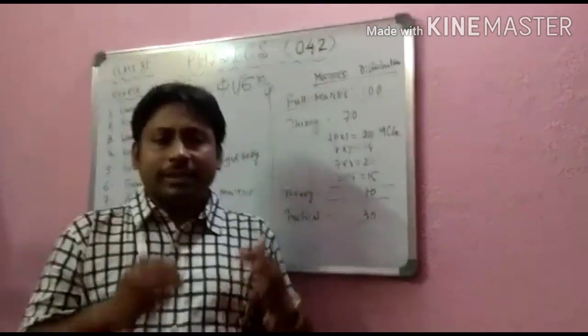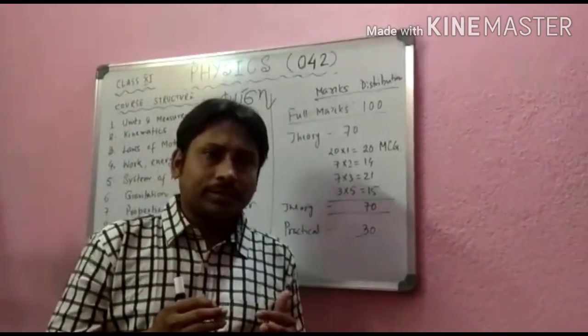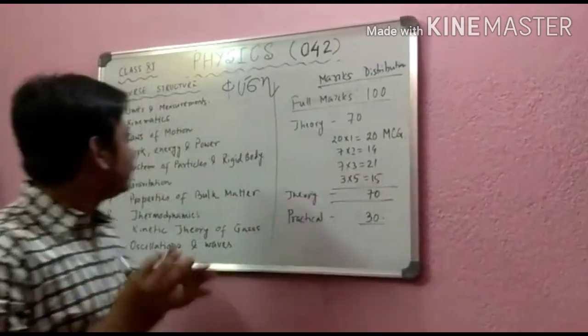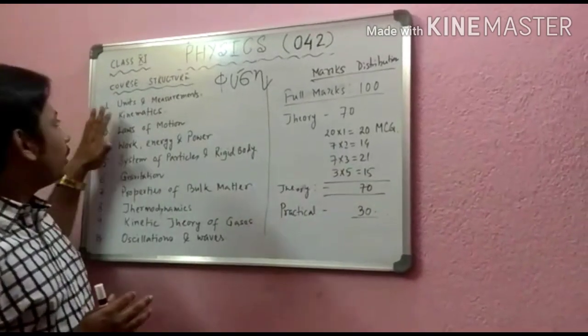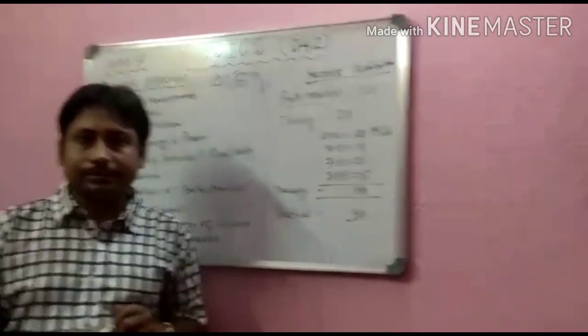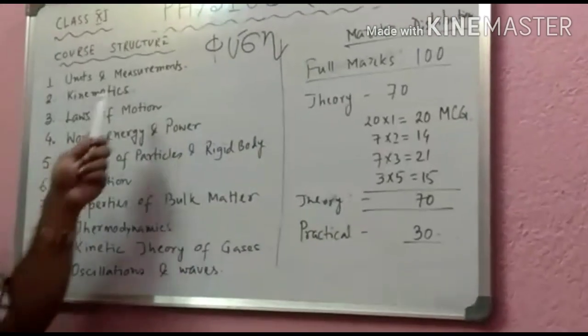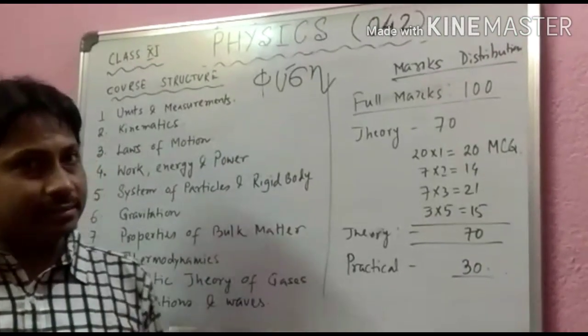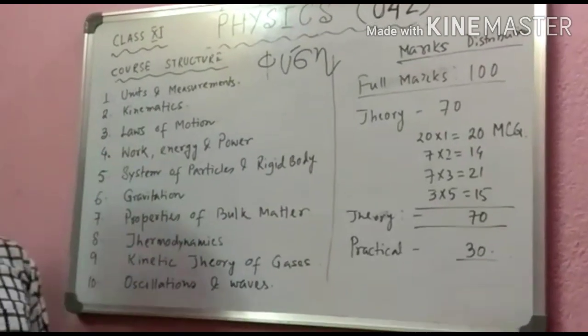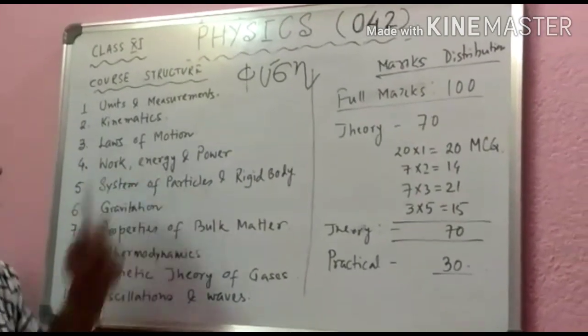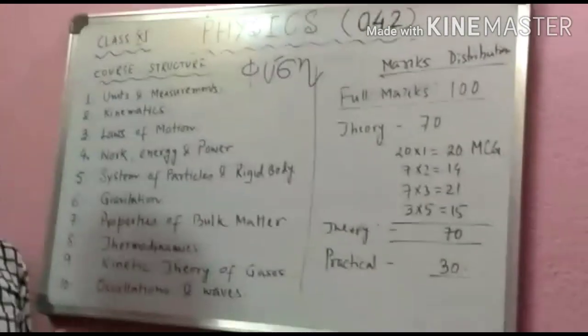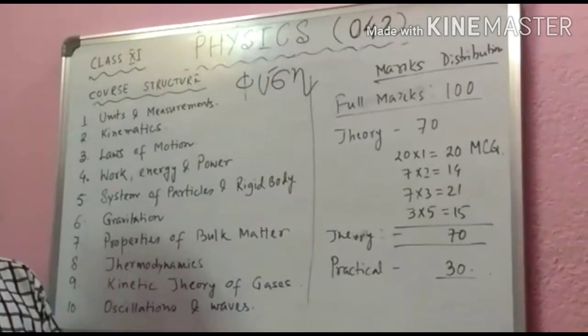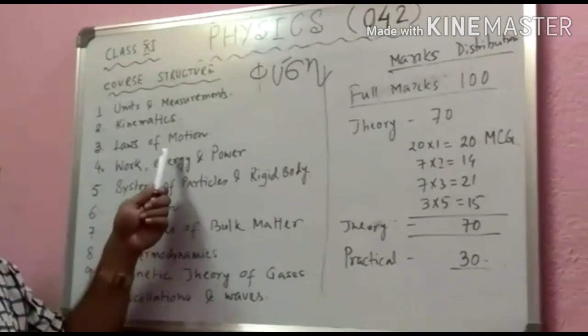Students, in class 11, I will tell you the total course structure. See, first of all you have Units and Measurements where you study about dimension and dimension analysis. Next we have Kinematics and Laws of Motion. In kinematics we study about straight line motion and motion in a plane. Laws of motion means Newton's laws of motion, friction, and circular motion.